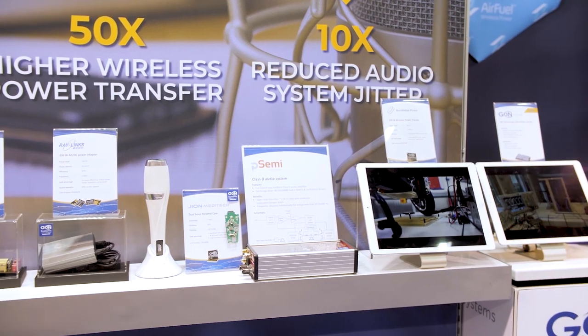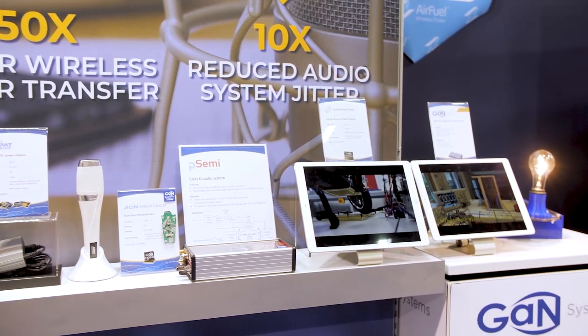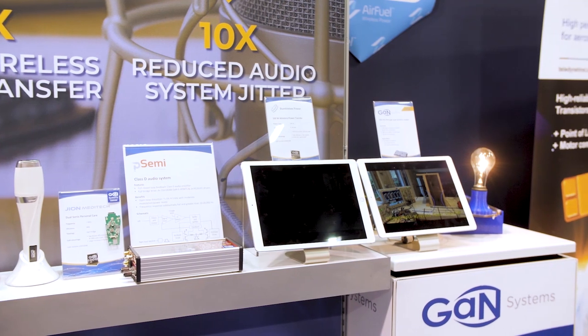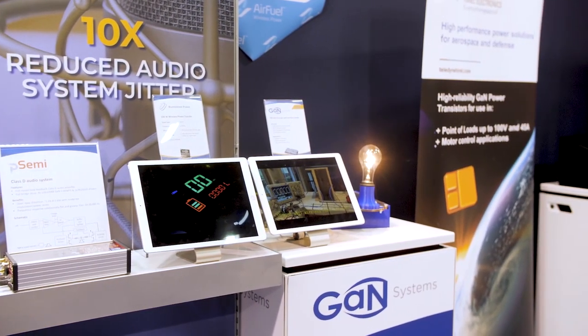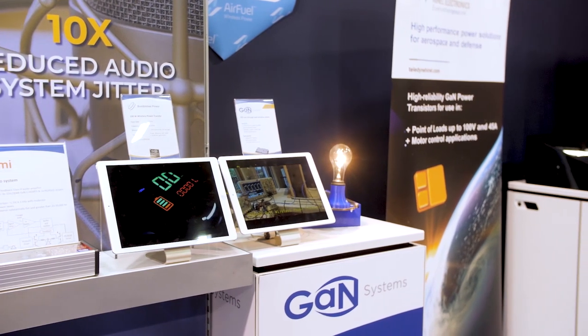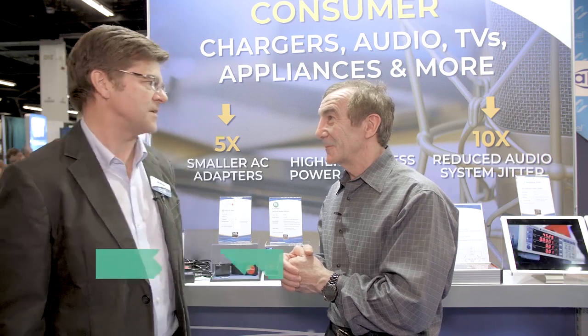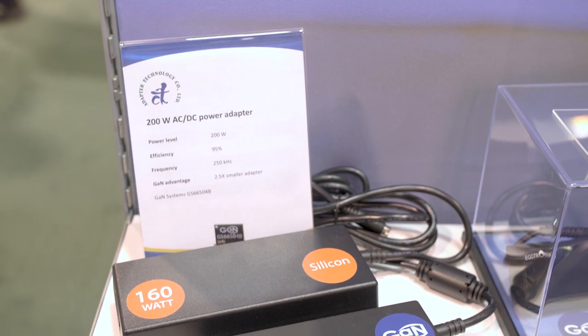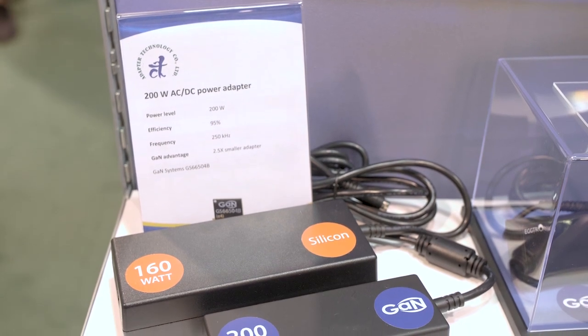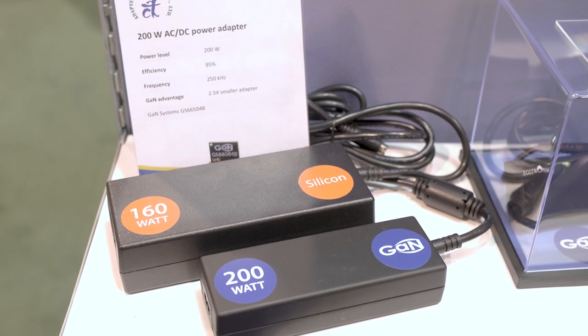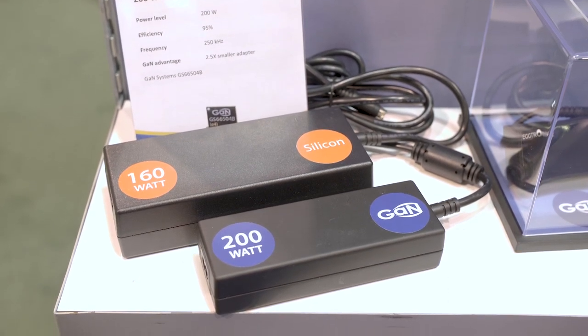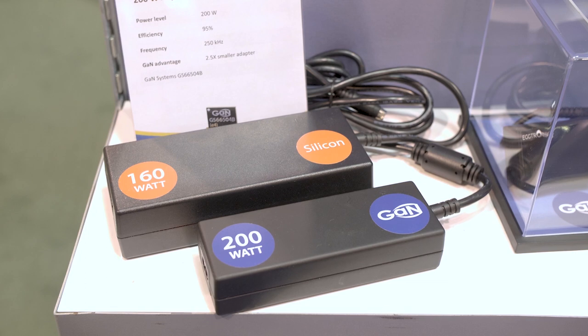Sure, I'd love to show you. I think what we'll do is concentrate right now on the consumer area. We've got a lot of neat designs both in wired adapters for things like cell phones and computers, also things like wireless charging — cutting the cords for all various kinds of equipment. So on the adapter front here, this is a company in Taiwan that took their 160-watt silicon adapter and redesigned it with GaN, and now they have a 200-watt adapter in about half the size of their silicon predecessor.